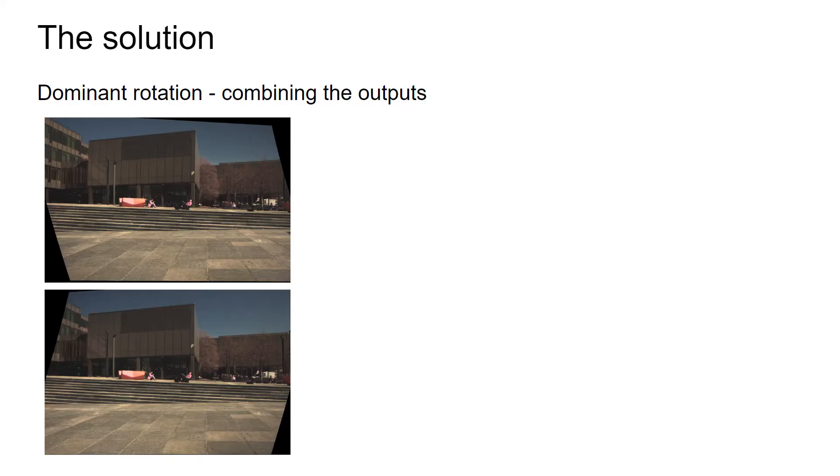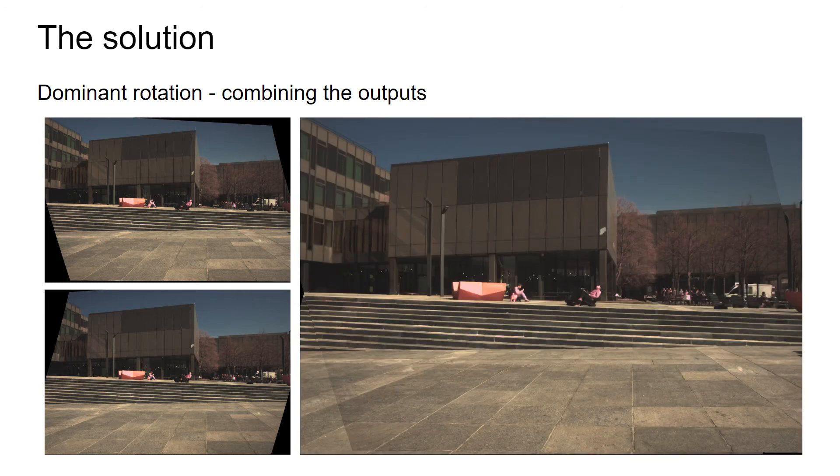We can also warp both input images and combine the outputs, such that a more complete image is formed. Note that even though the stitching is not perfect and some artifacts are still visible, this is without any kind of post-processing, just the pure geometrical warping using the computed motion parameters.